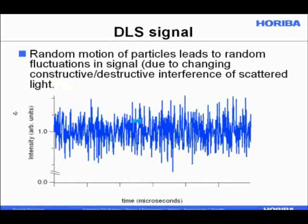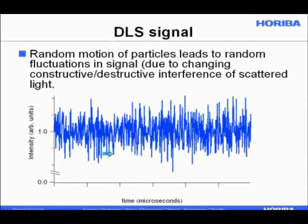The signal coming into the detector looks like noise because it essentially is. The scattering from each particle will interfere constructively and destructively with scattering from other particles. While the particles are moving randomly with respect to each other, the interference is going to be random. These are real fluctuations from variations in the system — not detector noise. If we can characterize this noise, we can determine how the particles move and use that to find particle size.